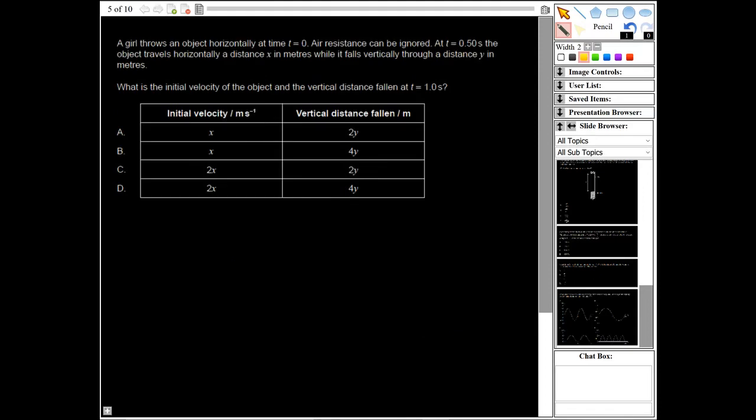Okay, moving on to question five. Says a girl throws an object horizontally at time t equals zero, and resistance can be ignored. At t equals 0.5 seconds, the object travels horizontally a distance x in meters while it falls vertically through a distance y in meters. What's the initial velocity of the object and the vertical distance fallen at t equals one?